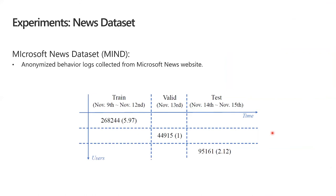For experiments, we use the MIND dataset, which contains anonymized behavior logs from the Microsoft News website. We first group impressions in MIND by user ID and separate all users into training, validation, and testing datasets. To avoid information leakage, the validation and testing datasets have no overlap on both user and time.